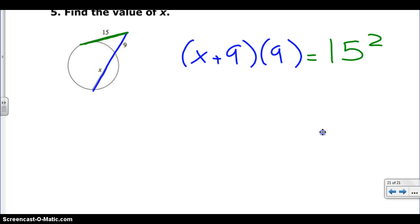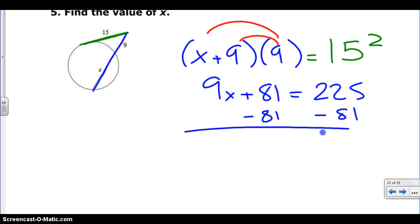So we distribute the 9 just like we did in the last two problems, and we get 9X plus 81 equals 15 squared, which is 225. Then we subtract 81 from both sides, and we get 9X equals 144. Does that look right? Is that right? 144 would be absolutely right. Yeah, okay. And then we have to divide by 9 on both sides. And when we do that, we get a big fat 16.